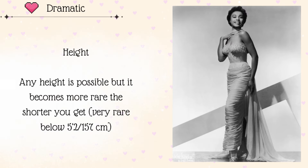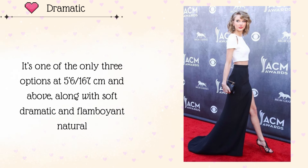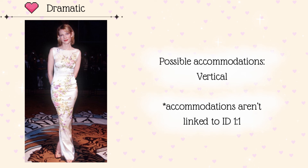It is actually possible to be a Dramatic at any height, however it's going to be more rare the shorter you get — very rare if you are very short. If you are around 167cm or 5'6 and above, you have Automatic Vertical and Dramatic becomes one of your only three choices. The other two are Soft Dramatic and Flamboyant Natural. I have made a very in-depth video about vertical that I'll link in the cards. Accommodating only vertical is going to be the most likely scenario for Dramatics, though there are some rare cases where a Dramatic has another accommodation.